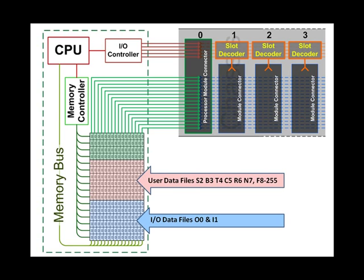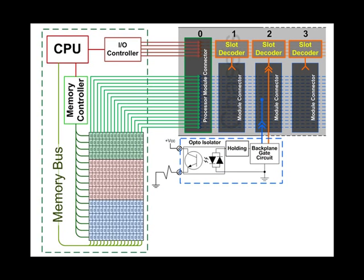To our PLC system, let's add a 16-point output module represented by a single point of 16 points. Remember from a previous discussion that the backplane gate circuit switches the state from the backplane conductor to the holding circuit which controls the actual output. To our PLC system, let's also add a 16-point input module represented by a single point of the 16 points.